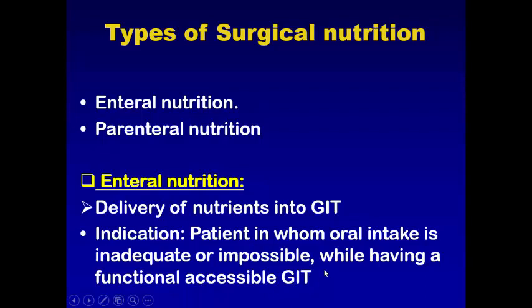The GI tract is normal for digestion and absorption, but the patient may not be able to eat. This situation applies to comatose patients, patients with severe dysphagia for any cause, after head and neck surgery, critically ill patients after severe trauma, and those with low output enterocutaneous fistula.